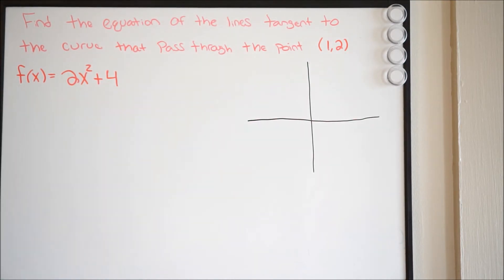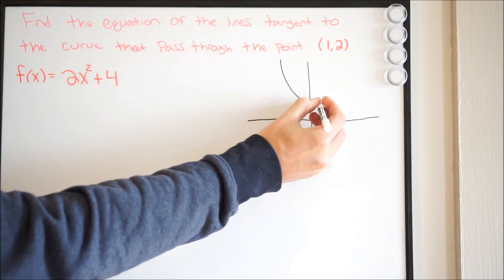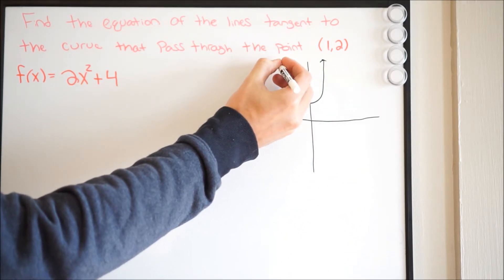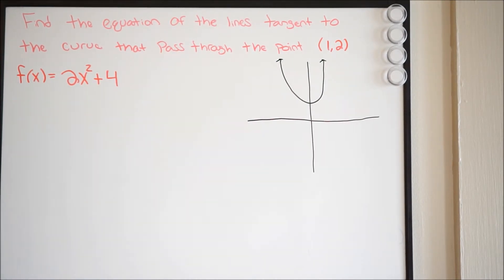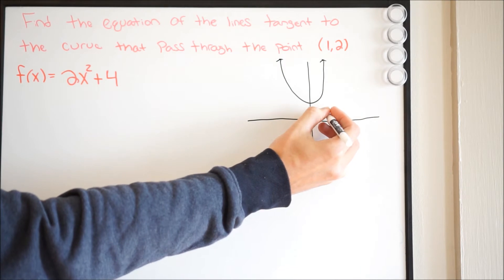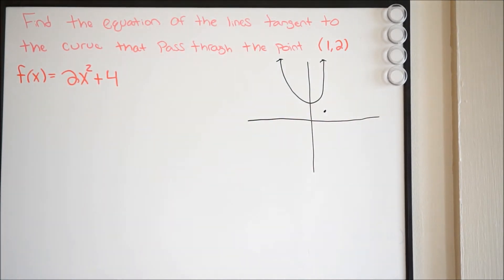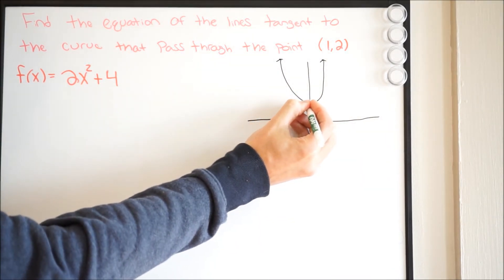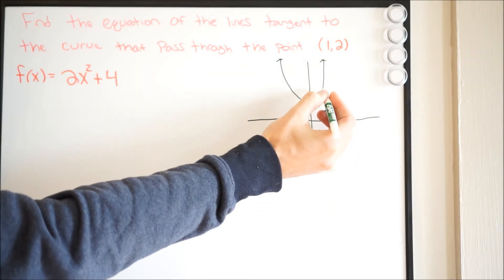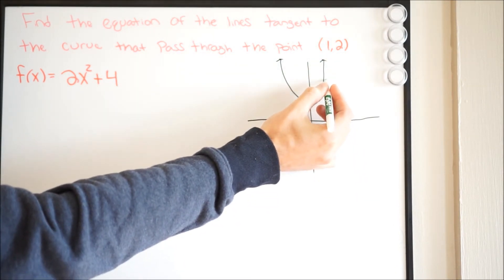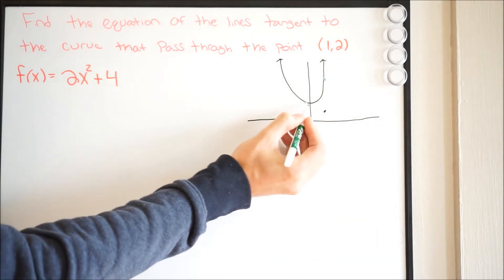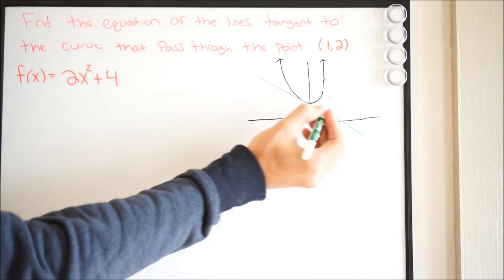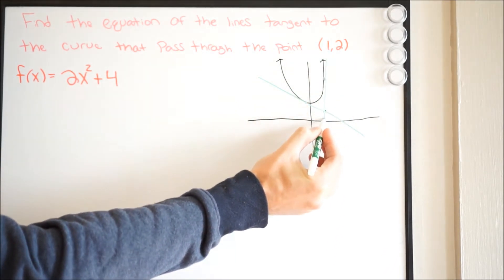I'm going to draw a quick coordinate grid. We know that this is going to be a quadratic, so let's draw that in. Essentially what they're asking for — we have this point (1, 2) right about here. They want to know the lines tangent to the curve that pass through this point. Looking at this, we can see we're going to have two tangent lines — something like this, and then another one like this.